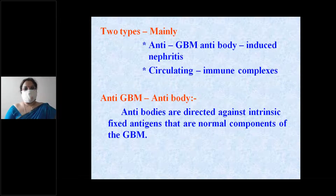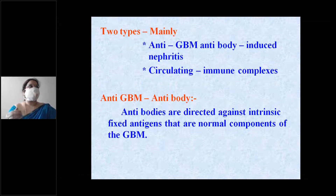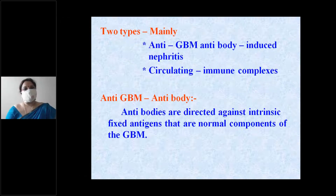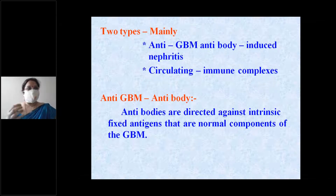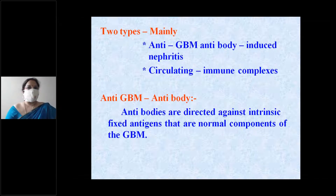Anti-glomerular basement membrane antibodies are directed against fixed antigens, such as intrinsic tissue antigens — including DNA or nuclear proteins. These antibodies against intrinsic fixed antigens are essentially directed against normal components of the glomerular basement membrane.